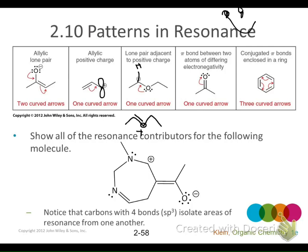Rather than moving the electron pair to a single atom, we move them all at the same time. For that one, the resonance structure ends up looking like what? If I draw it — it looks rotated. Yeah, it just looks like everything rotated over.